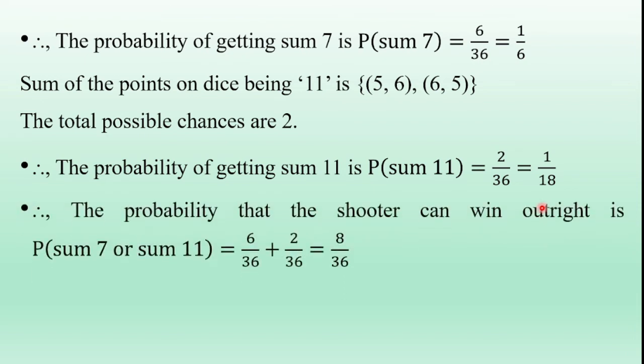The probability that the shooter can win outright — either sum 7 or sum 11 — is: P(sum 7) + P(sum 11) = 6/36 + 2/36 = 8/36. This is an example of the addition theorem of probability.